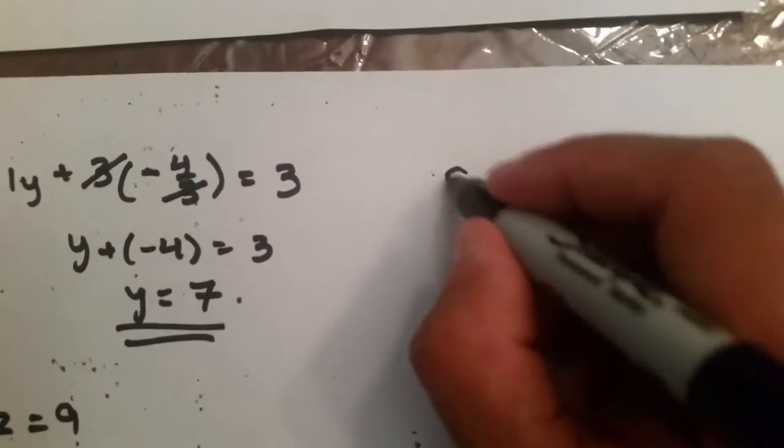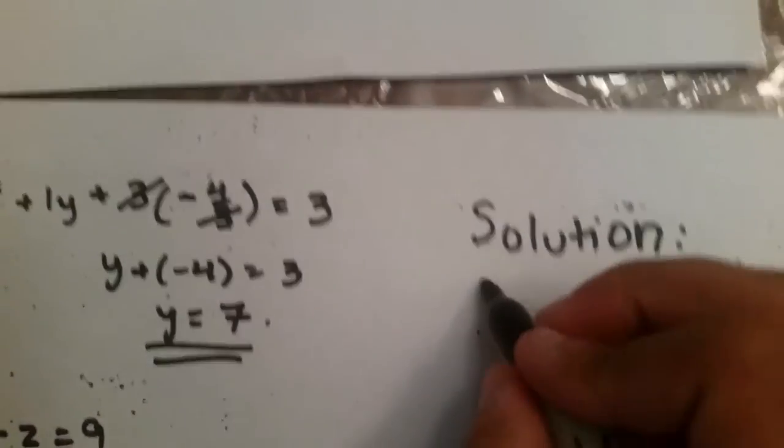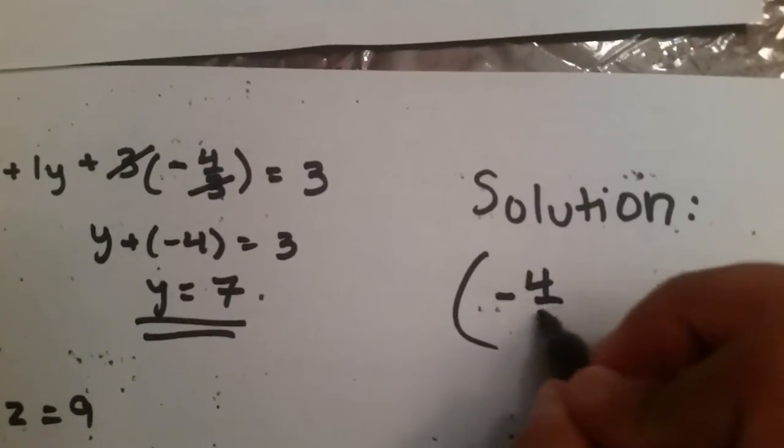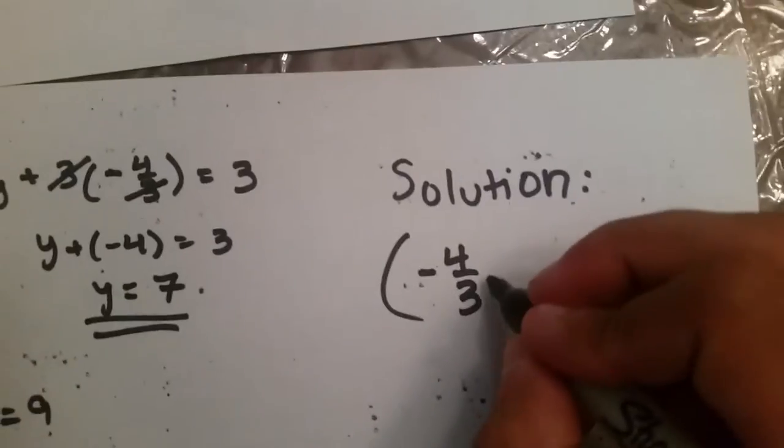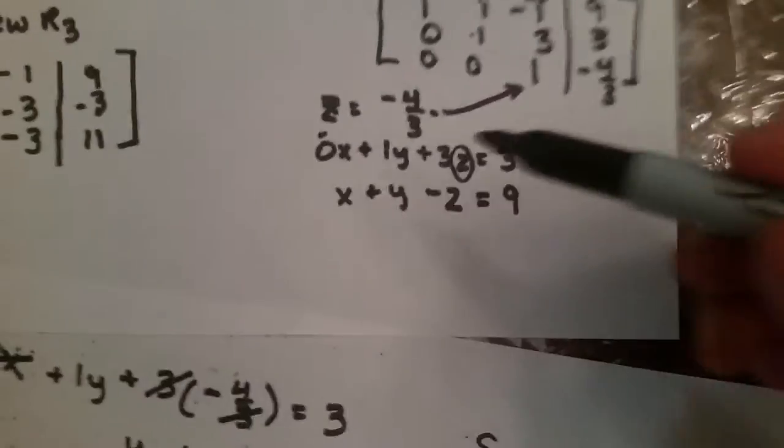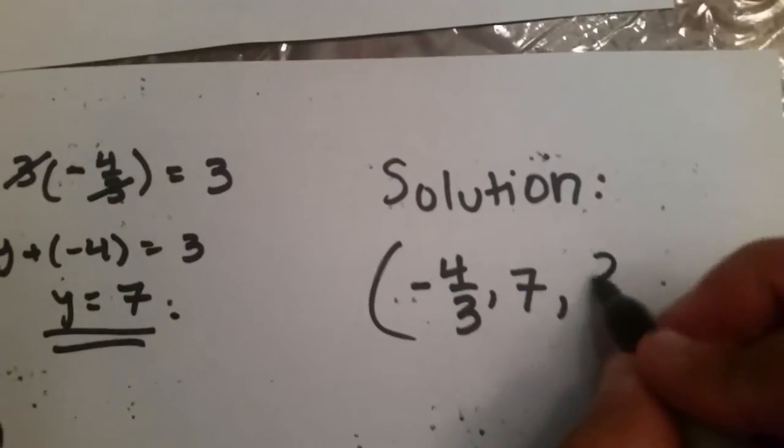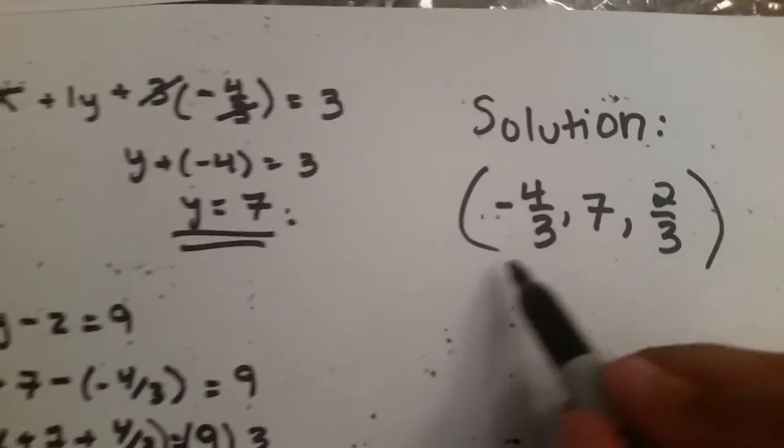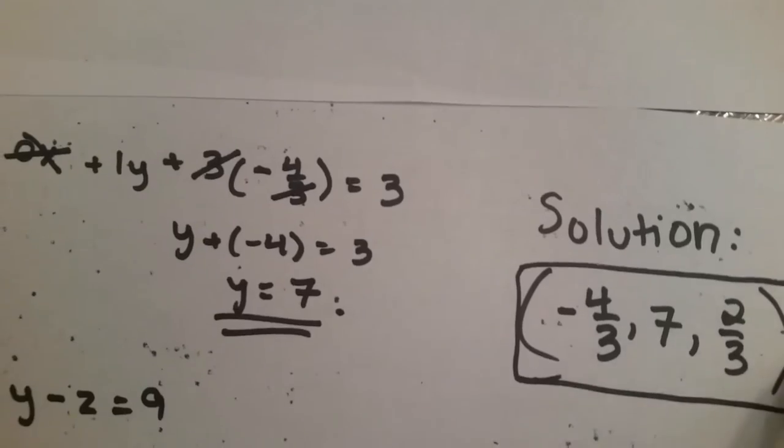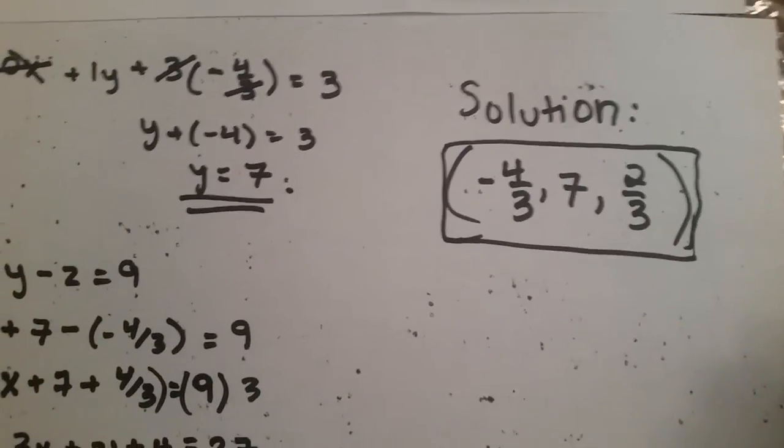So, our solution will look like this. Negative 4 thirds, which is our z value. 7, which is our y value. And finally, 2 thirds, which is our x value. Hope you learned how to do Gaussian elimination. Thank you.